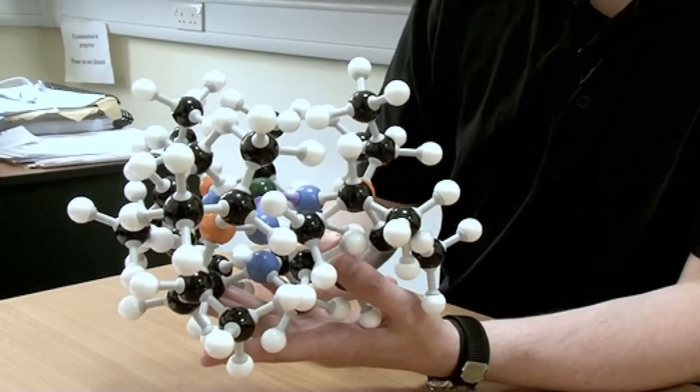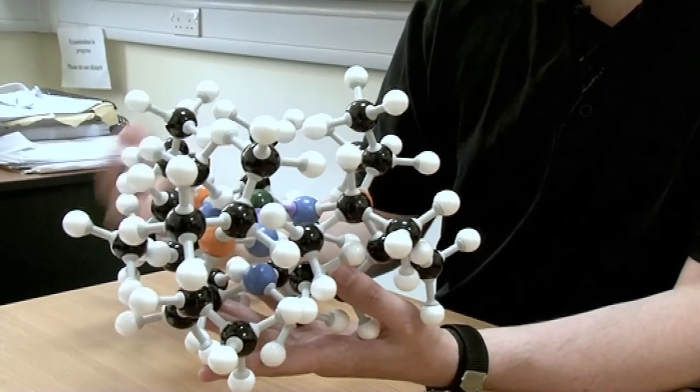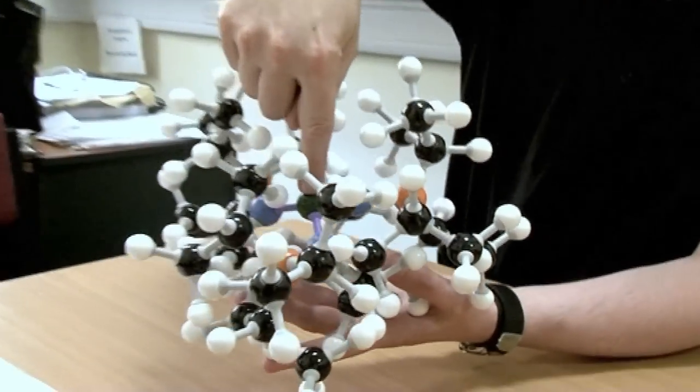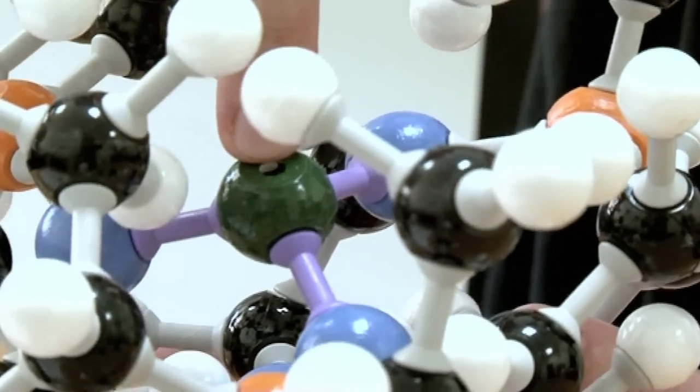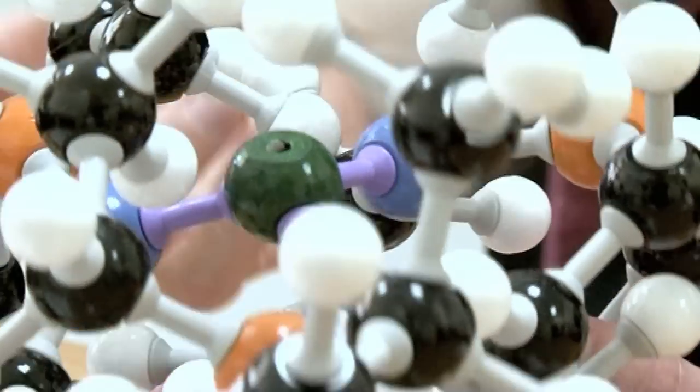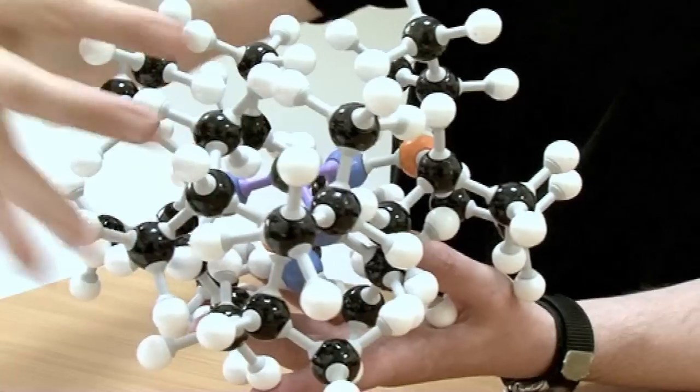What I hope you can tell immediately when you look at this is this is a really massive molecule. You almost cannot see the uranium which is in this molecule and it's this green sphere here that represents the uranium atom.